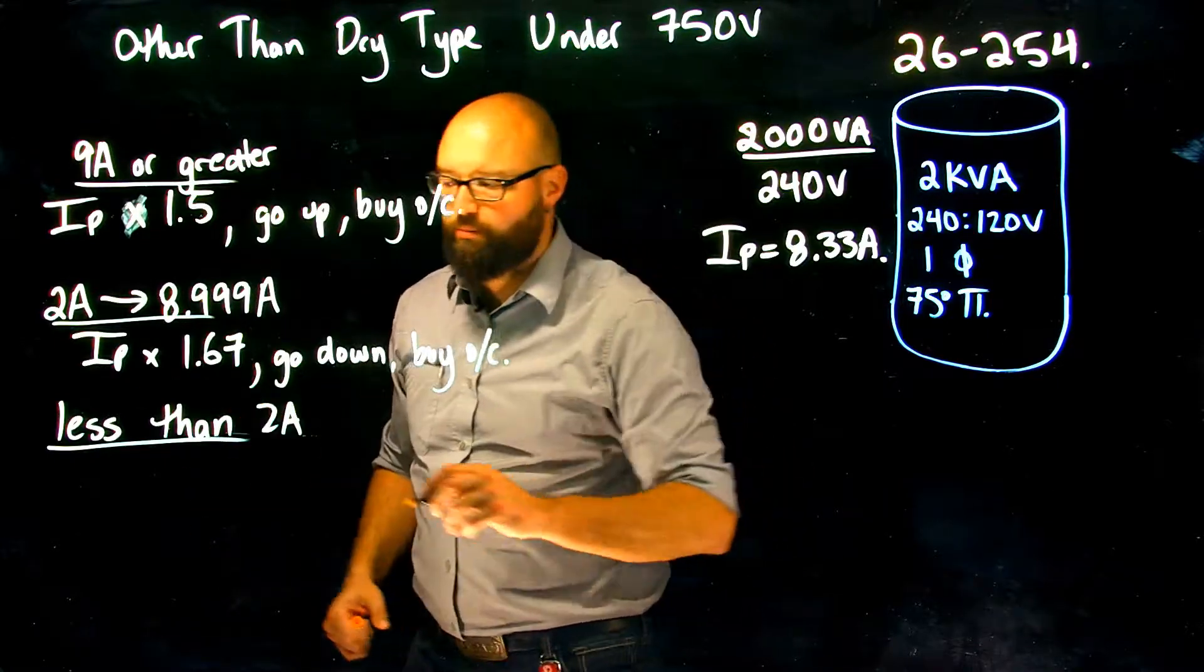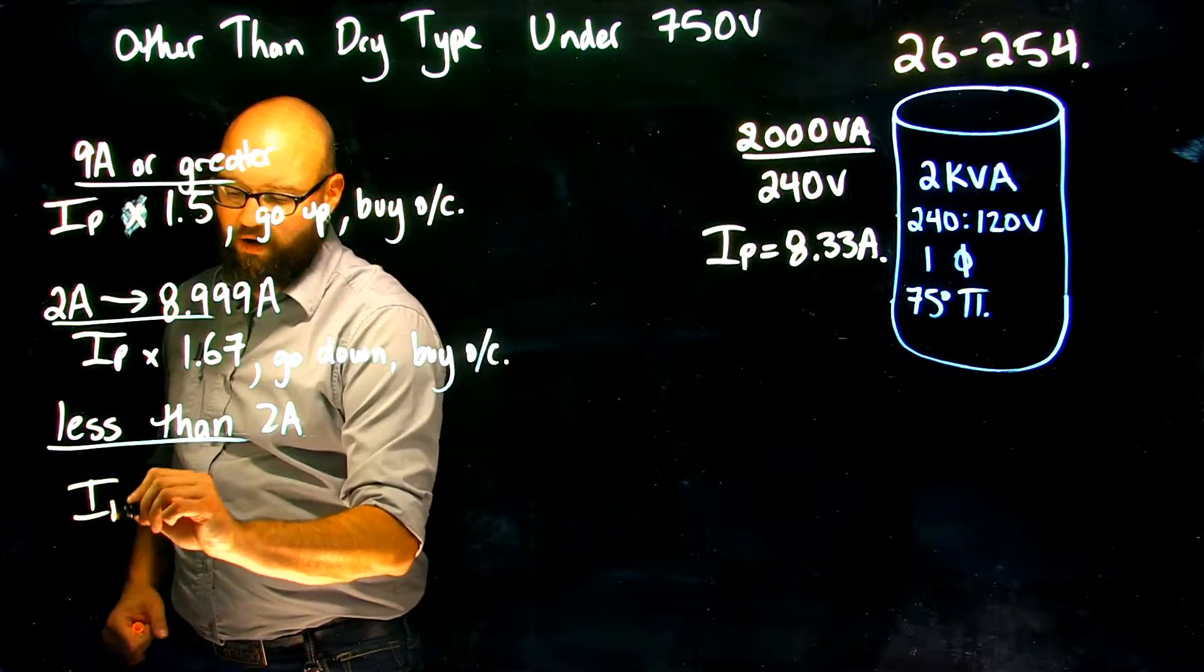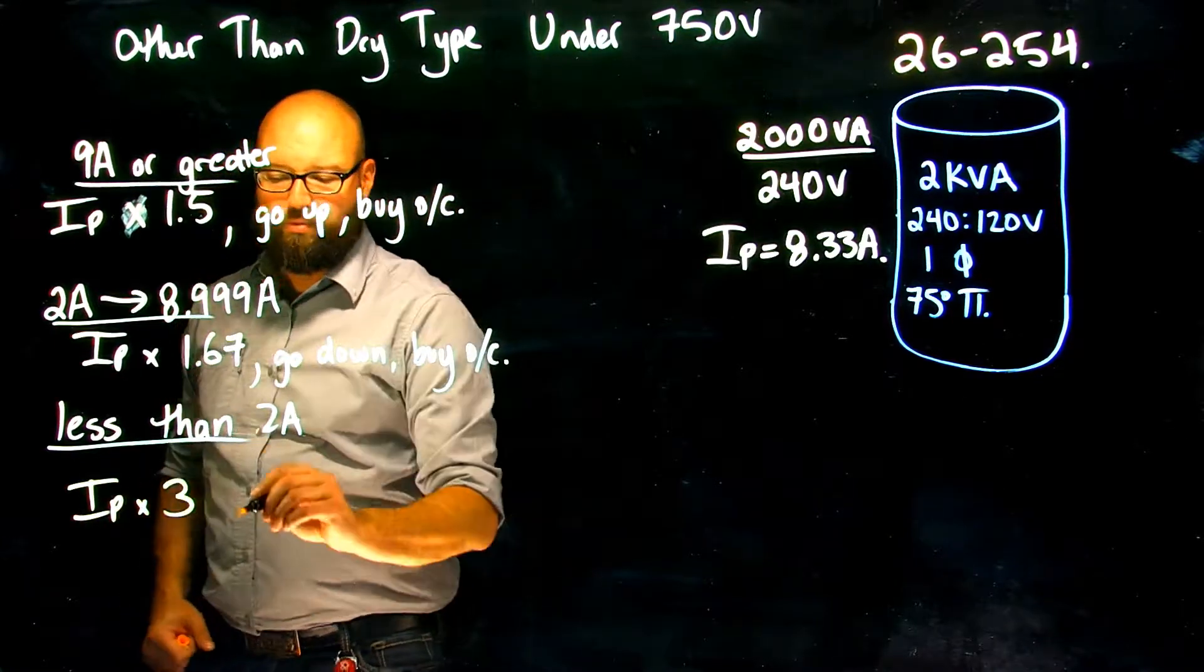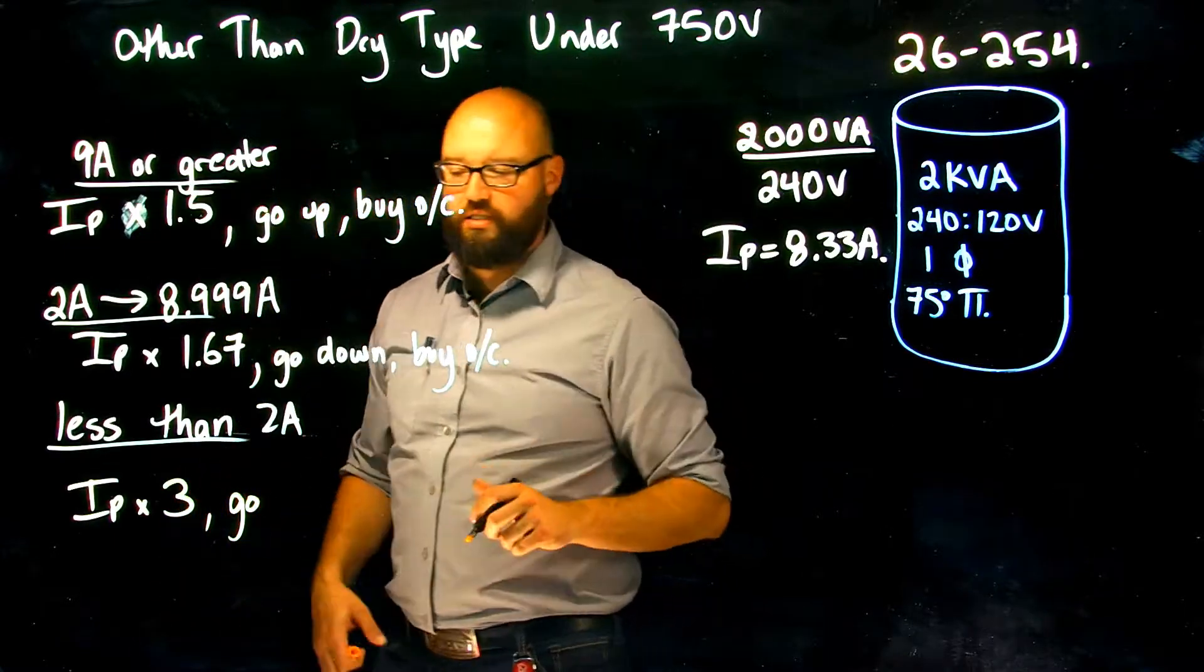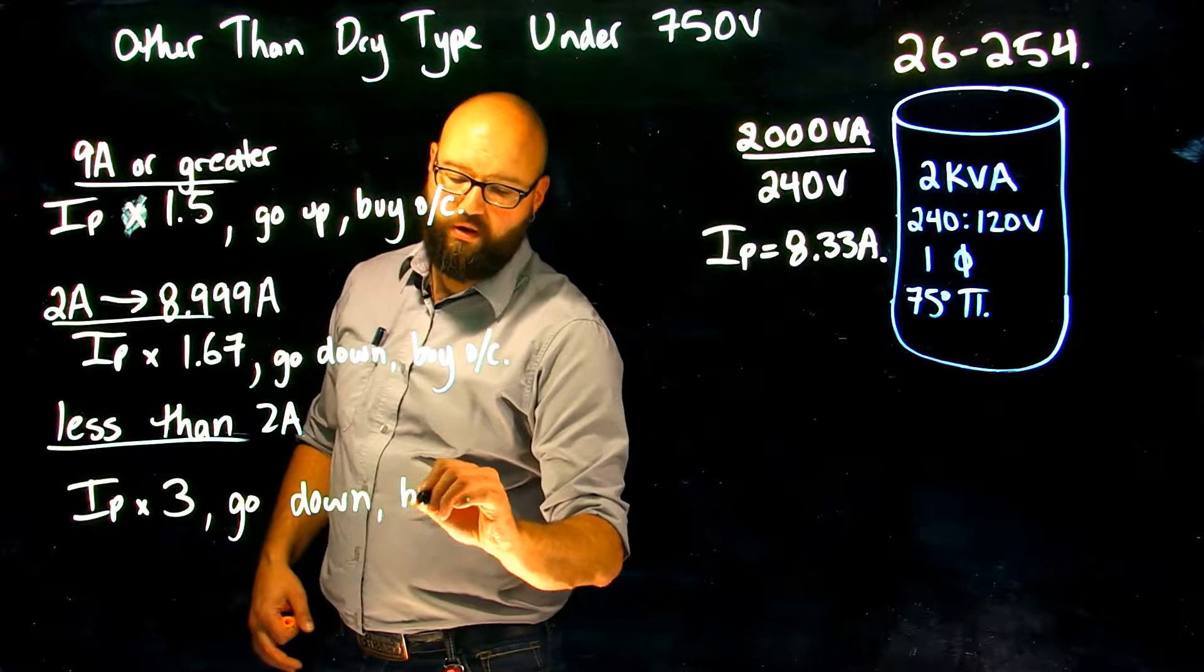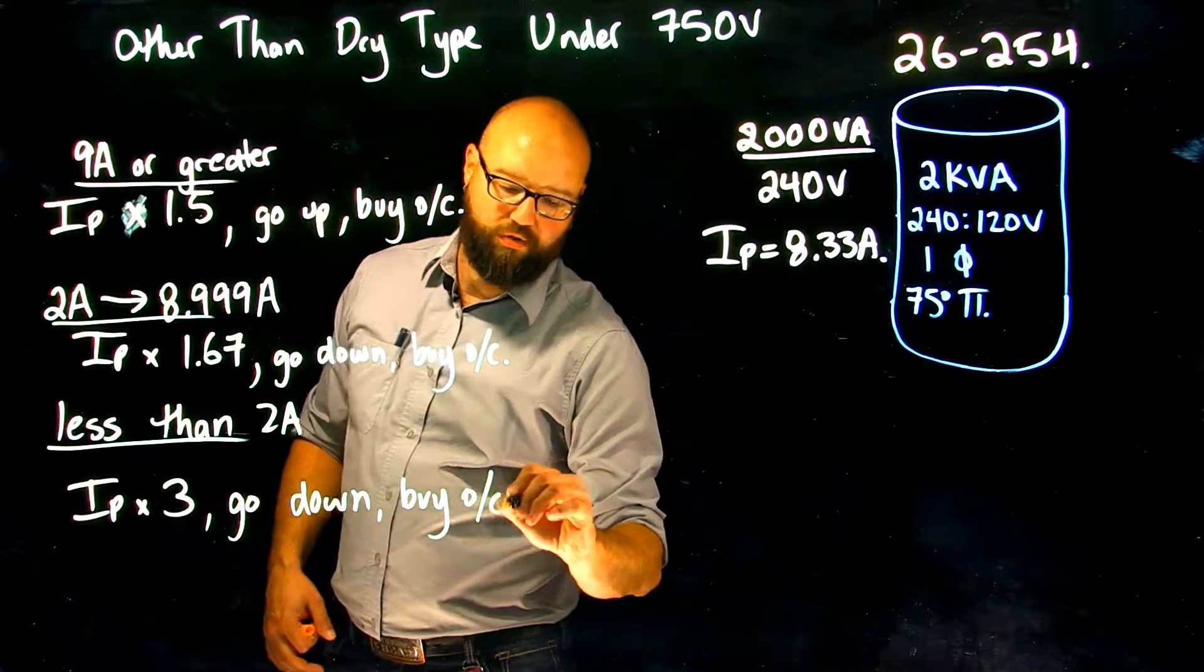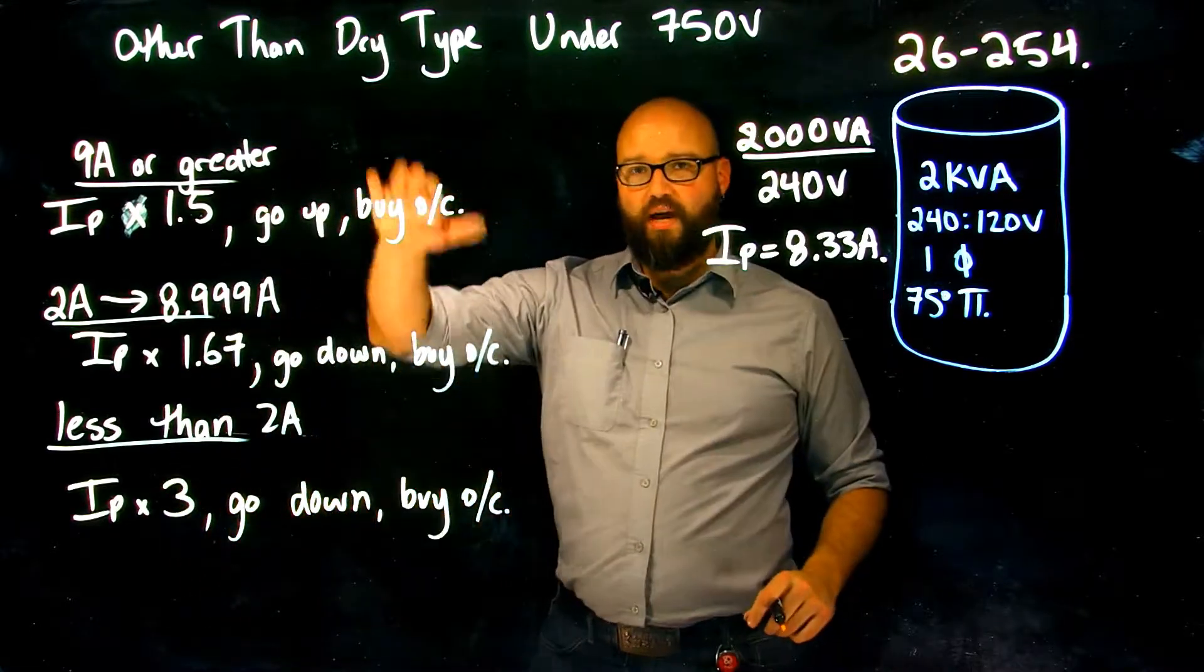So if it's less than 2, I primary times 3 or 300 percent, and again no exceptions to this. It tells me I cannot exceed, go down by overcurrent.